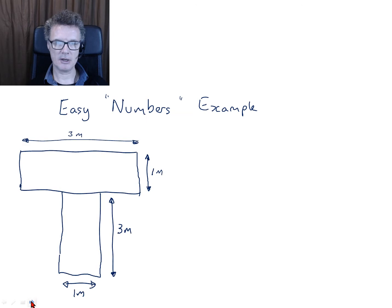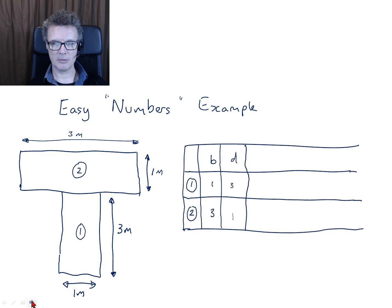So this is a problem using easy numbers. Obviously we wouldn't get bars sort of 1 meter thick and 3 meters long, but probably unlikely anyway. Nice simple numbers. So lower section, 1 meter width. So I put my b there, 1. Top section, 3 meter width. So I put my 3 there. Lower section, the depth is 3 meters. So that's 3 there. Upper section, 1 meter. So that's 1 there.